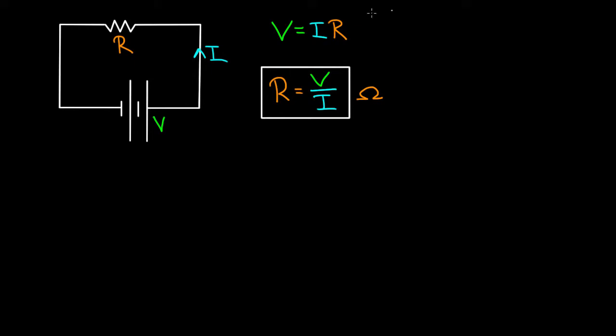But be careful, don't fall into the trap of thinking about this the way some people do. Some people think, if I want a bigger resistance, I'll just increase the voltage because that'll give me a bigger number up top. Bigger resistance? No, it doesn't work that way. If you increase the voltage, you're gonna increase the current. And this ratio is gonna stay the same.